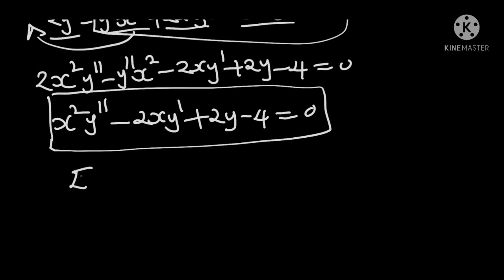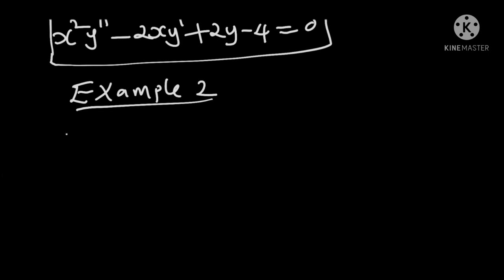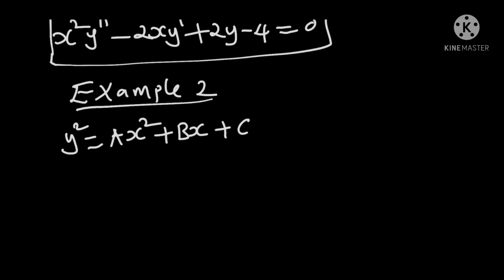Example 2. Suppose we have y squared equals ax squared plus bx plus c. In this primitive equation, we have three essential constants: a, b, and c. Therefore, we are required to differentiate it three times.